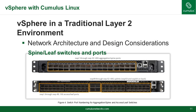Here's an example of two bare-metal switches for spine and leaves. For the spine, there's a 32 by 40 gig, and for the leaf, it's 48 by 10 gig with up to 6 times 40 gig uplinks. In Cumulus Linux, switch ports are labeled SWP1, SWP2, SWP3, and so forth — it stands for switch port 1, switch port 2, etc.